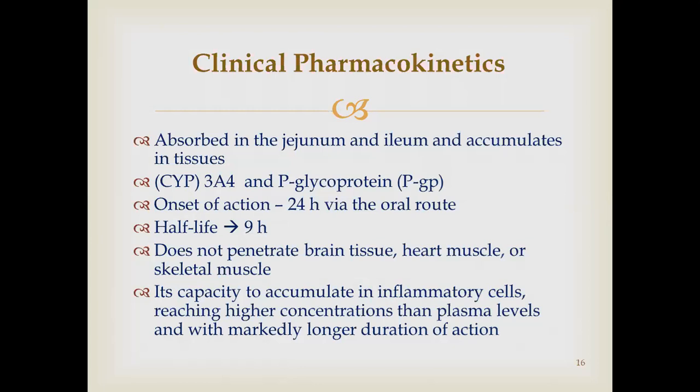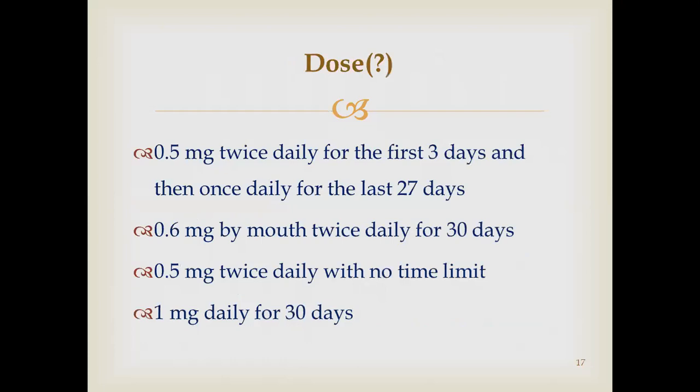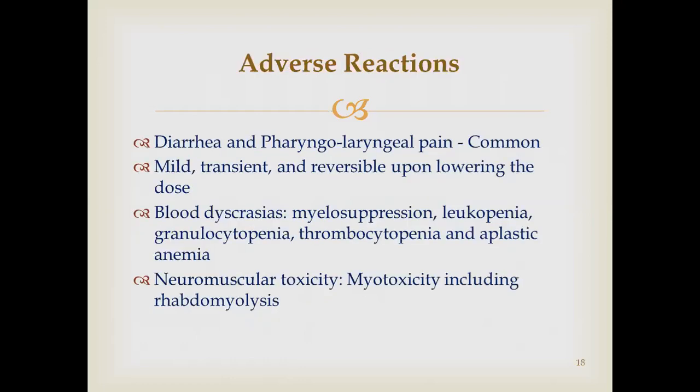Regarding dosing, various regimens were used across trials: in COLCORONA — 0.5 mg twice daily for three days then once daily for 27 days; another study used 0.6 mg twice daily for 30 days; others used 0.5 mg twice daily with no time limit, 1 mg daily for 30 days, or 0.5 mg twice daily for five days followed by 0.5 mg twice daily for another five days.